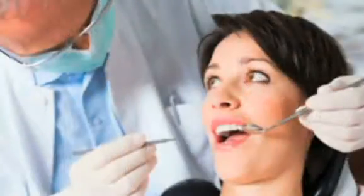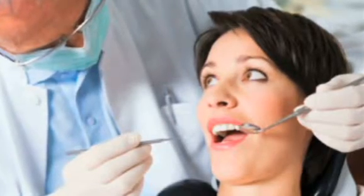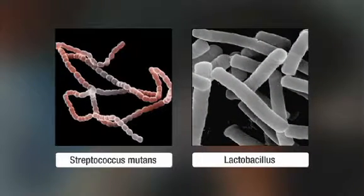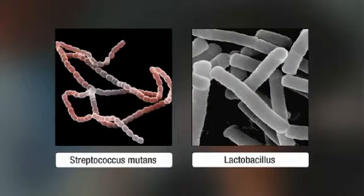Dental caries is a pH-specific disease. The bacteria that were once blamed as being the sole cause of dental caries, Streptococcus mutans and Lactobacillus, are just two of the many normal inhabitants in the biofilm.